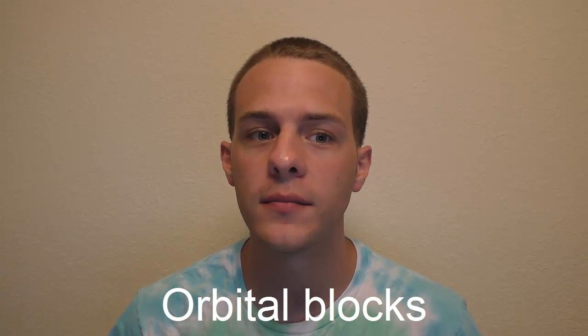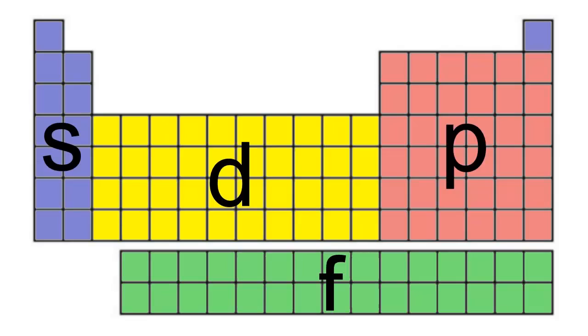We can better understand electron configurations by dividing the periodic table up into four sections called orbital blocks: the s-block, p-block, d-block, and f-block. These blocks are divided according to which type of orbitals hold the highest energy electrons for each element. So an element in the s-block has its highest energy electrons in s-orbitals, an element in the p-block has its highest energy electrons in p-orbitals, and so on.